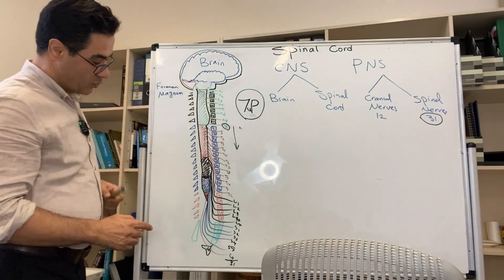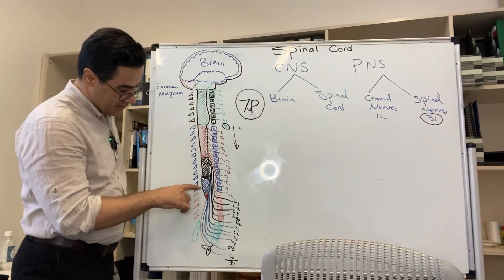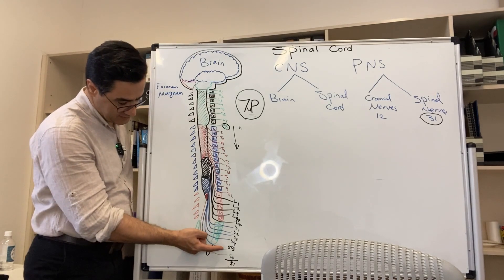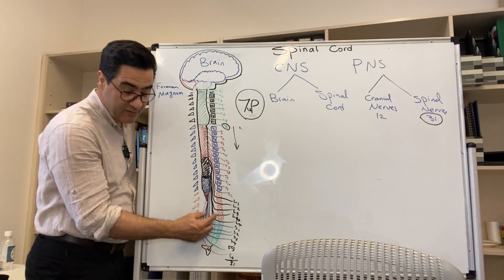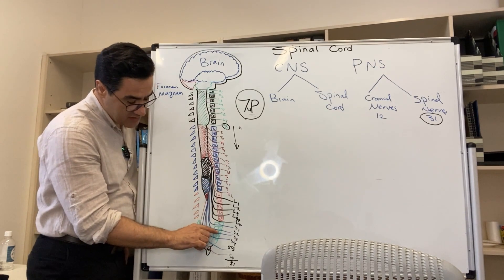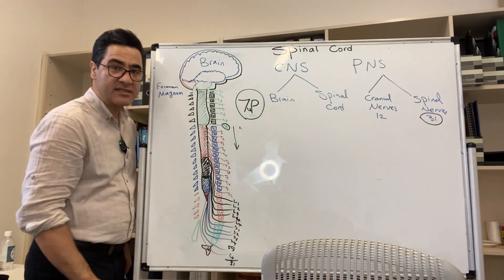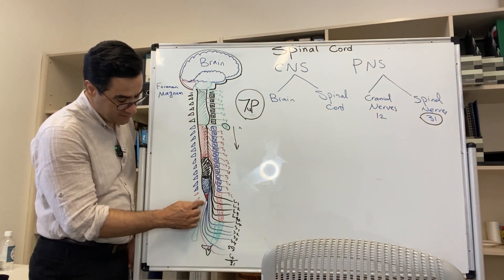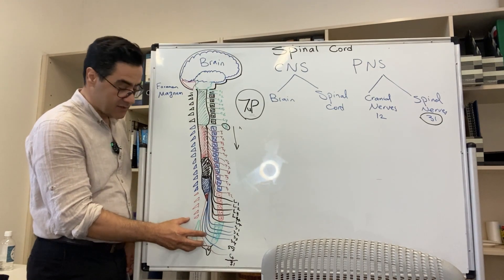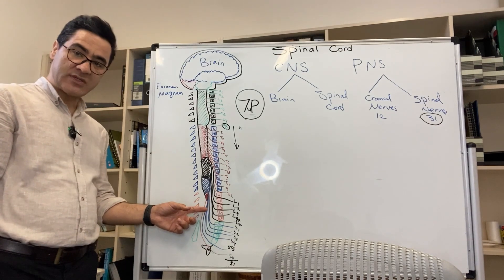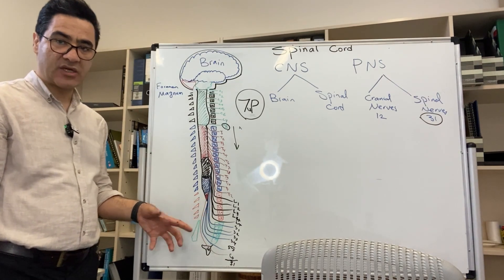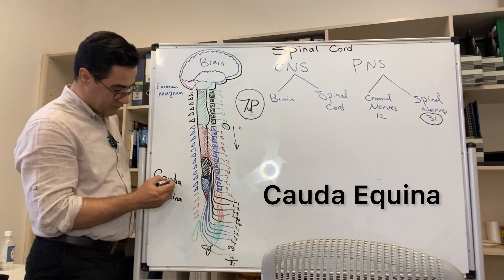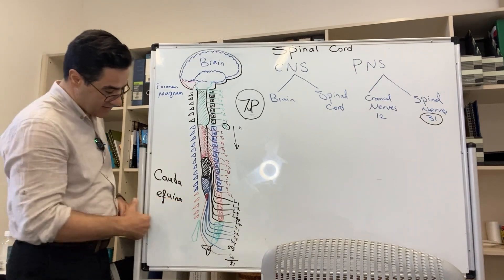Since the spinal cord finishes at L2 but we still have lumbar, sacral, and coccygeal nerves, these nerves must descend through the vertebral column to reach and exit below their same-named vertebra. Below L2, these descending nerves — lumbar, sacral, and coccygeal — together look like a horse's tail. In anatomy, this is called the cauda equina: 'cauda' meaning tail, 'equina' meaning horse.